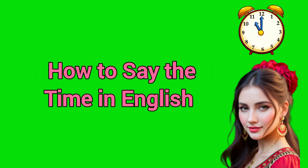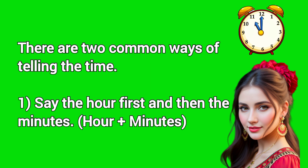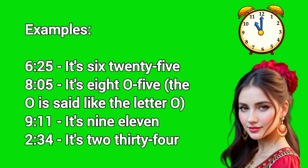How to say the time in English. There are two common ways of telling the time. 1. Say the hour first and then the minutes — hour plus minutes. Examples: It's 6:25. It's 8:05.